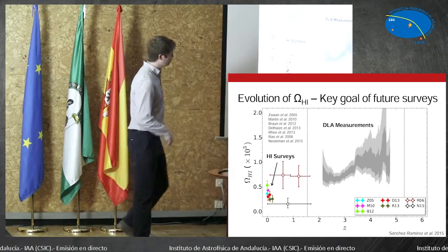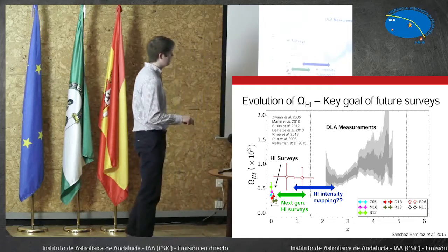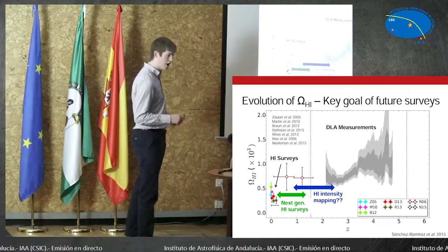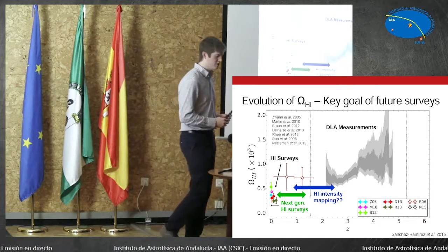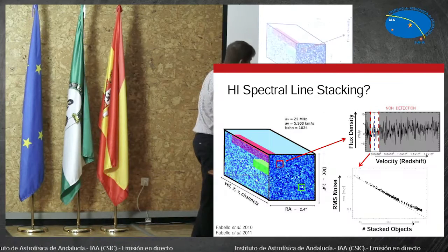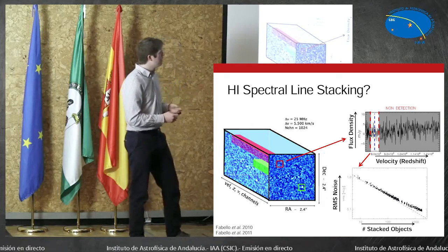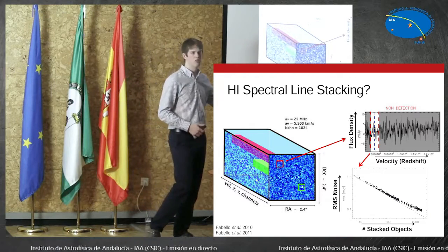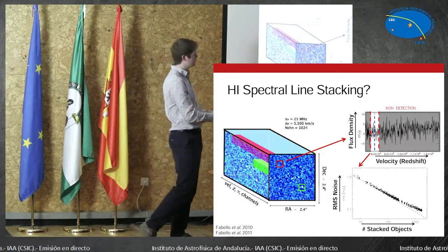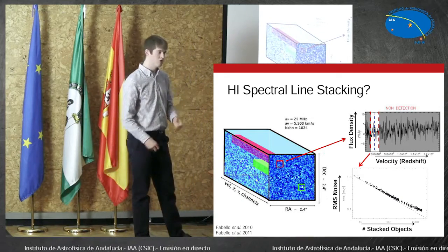These surveys are going to probe this region, but even though they're integrating for thousands of hours, at the highest redshifts they're still not going to detect very many galaxies individually. So constraining how much gas there is is going to be difficult. What they will need to do is something called spectral line stacking, where you take an optical survey in the same direction as your H1 survey, get the positions and redshifts of the galaxies, and then stack their H1 spectra together to get an average detection.